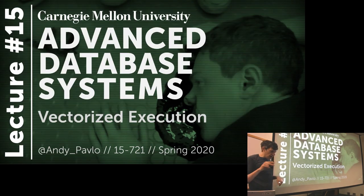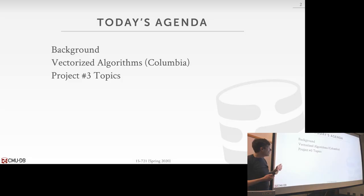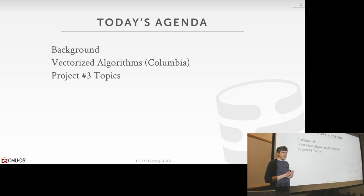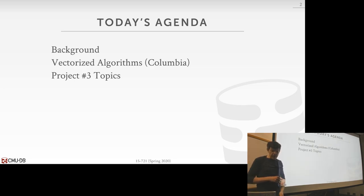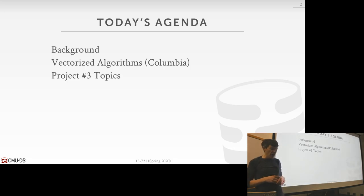Today we're going to talk about vectorized execution. Compilation and query compilation from last class and vectorization are the two main methods we can apply in a modern database system to improve query performance. I'll first talk about what vectorization is, how we're going to use SIMD, and then cover the paper you were assigned — a recipe book from Columbia on how to implement classic database algorithms using SIMD. We'll finish up talking about project three topics.